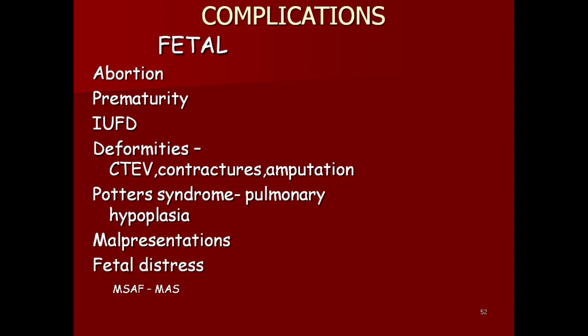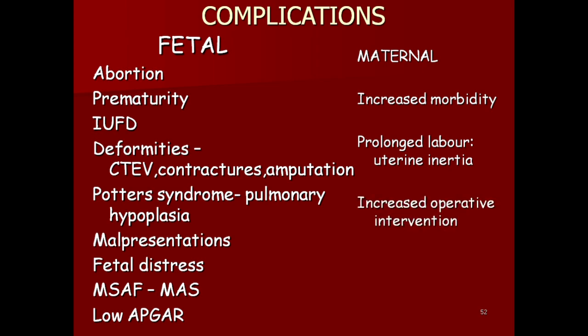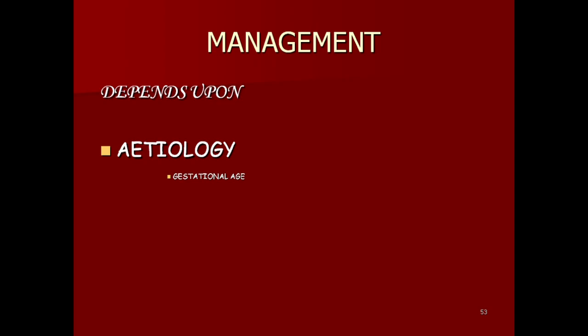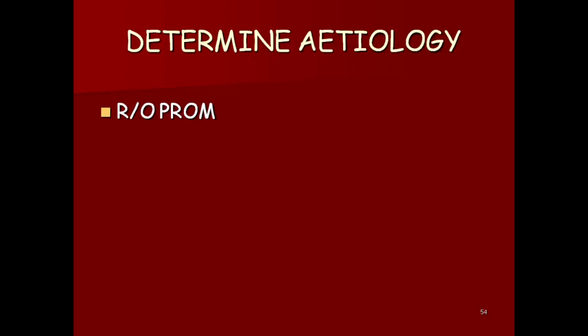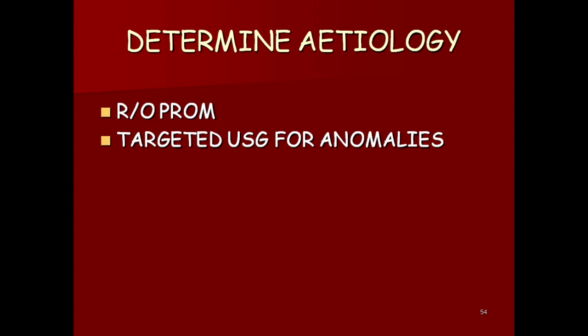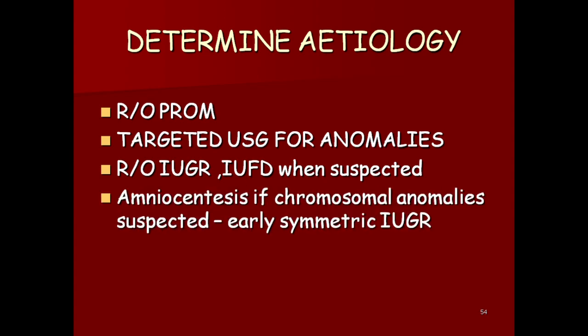Maternal complications include increased morbidity, prolonged labor due to uterine inertia, and increased operative interference because of malformations and fetal distress. Management depends on etiology, gestational age, severity, and fetal status and well-being. Determine etiology: rule out premature rupture of membranes, targeted USG for anomalies, rule out IUGR, intrauterine fetal death. Amniocentesis if chromosomal anomaly is suspected.